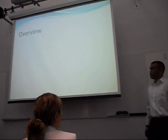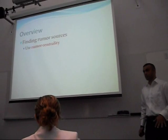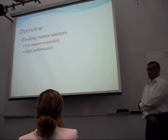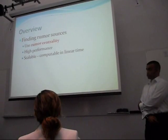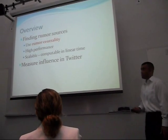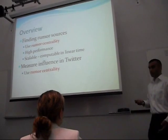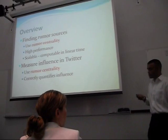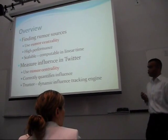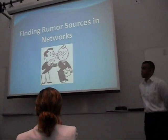Here's a quick overview of the talk. First, we'll talk about finding a rumor source, and we'll show that the right centrality for this problem is something we developed called rumor centrality. This rumor centrality is a high-performance solution — it finds the source with high accuracy — and also a scalable solution, computable in linear time for any network. The second part of the talk covers measuring influence in Twitter. We'll show that rumor centrality is again the right centrality measure, correctly quantifying influence, demonstrated with empirical data from Twitter. Based on those results, we'll show a thing we developed called TrueRumor, a dynamic influence tracking engine for Twitter.